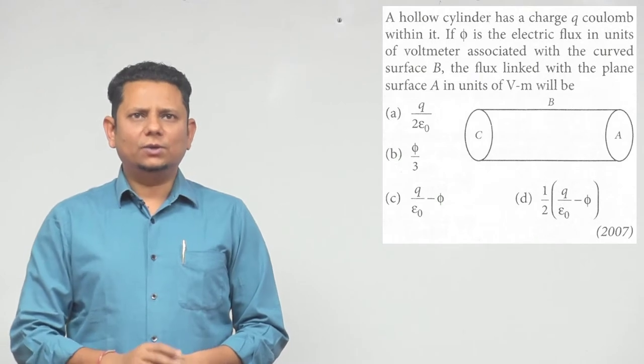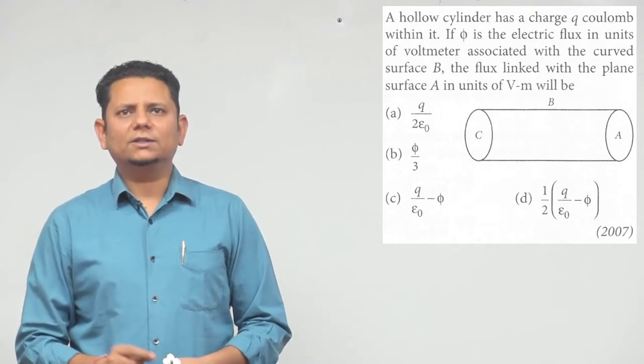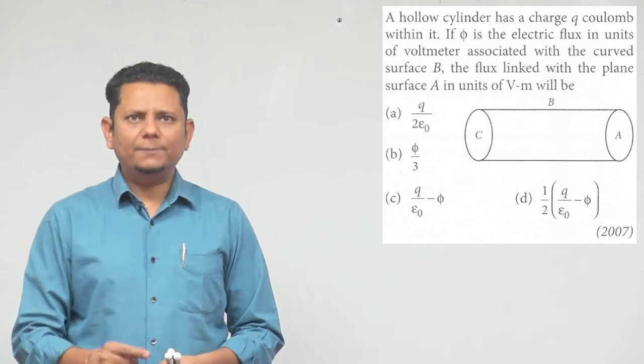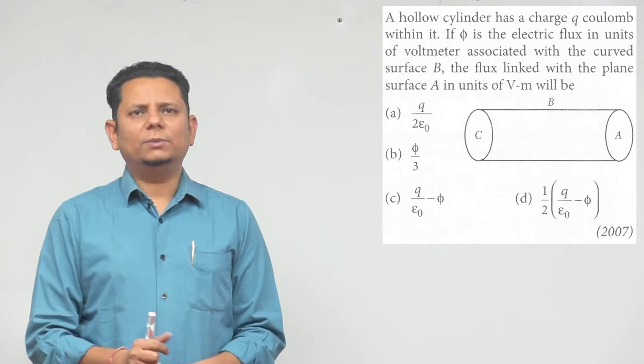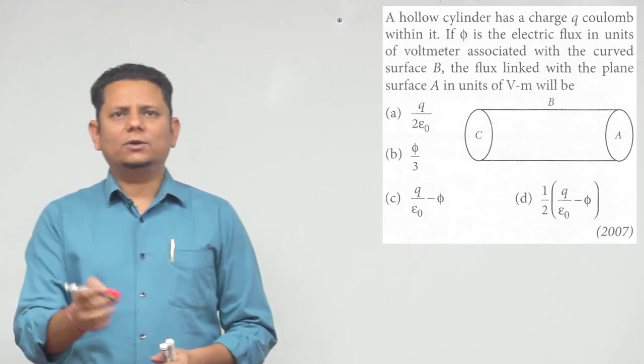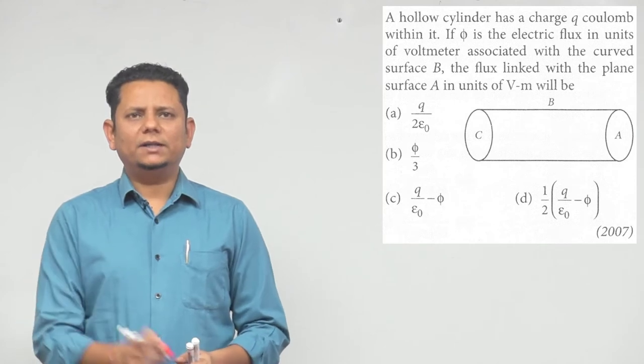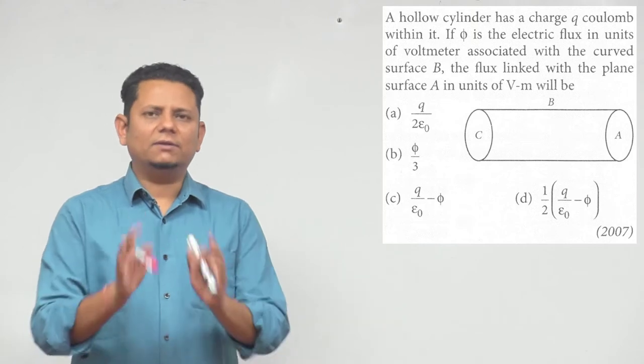Next question. This question was asked in the exam. The question says: A hollow cylinder has a charge q coulomb within it. If phi is the electric flux in units of volt-meter associated with the curved surface B, the flux linked with the plane surface A in units of volt-meter will be. And our options are: q divided by 2 epsilon, or phi by 3, or q by epsilon minus phi, or half q epsilon minus phi.